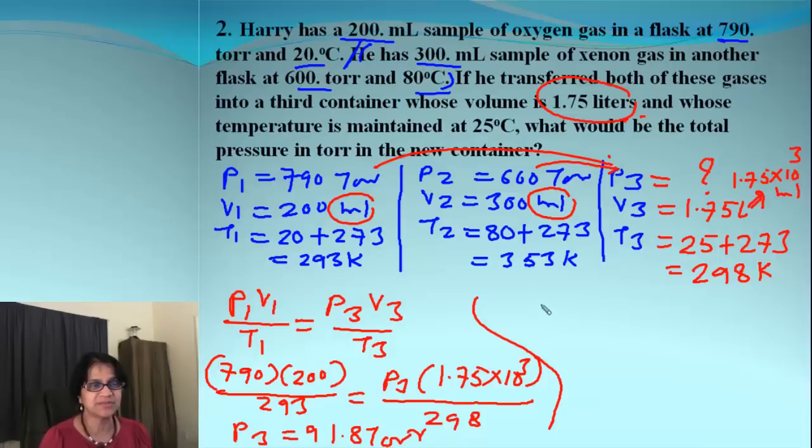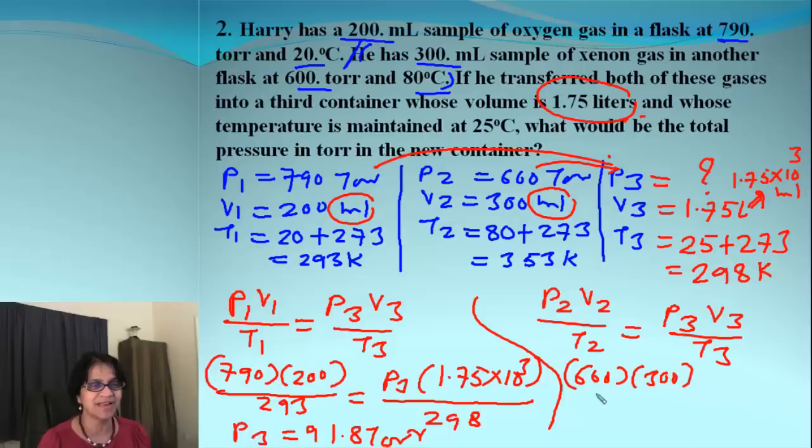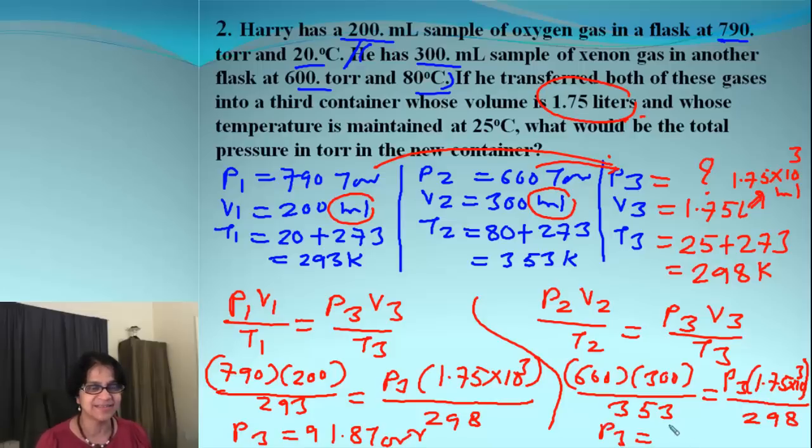And then, we do same thing for second gas, which is P2 V2 over T2. And, now, that is getting mixed up into a new container. So, that's P3 V3 over T3. And, then, we again do plug and check. So, it's 600 times 300 divided by 353. And, that gives you over here pressure P3, which is unknown. Then, volume is 1.75, 10 to the third, divided by 298. What do we get P3 here? That comes out to be 86.8.